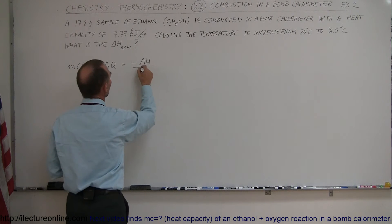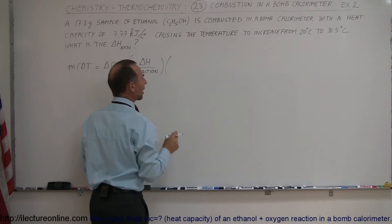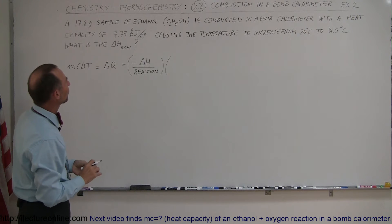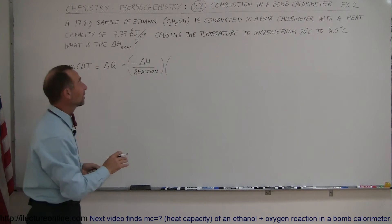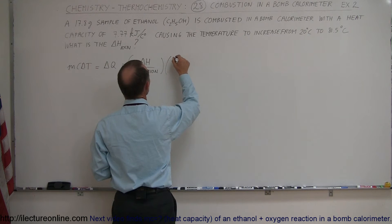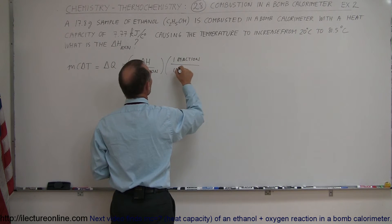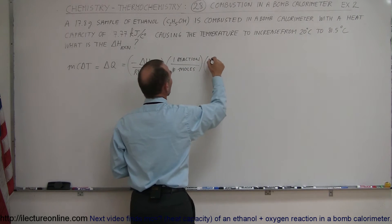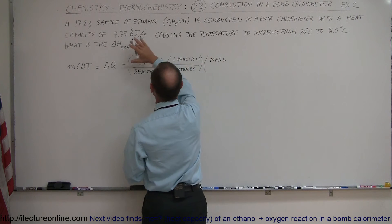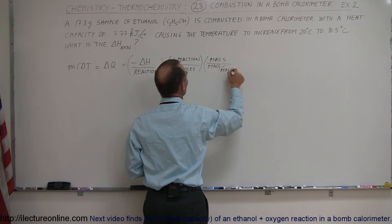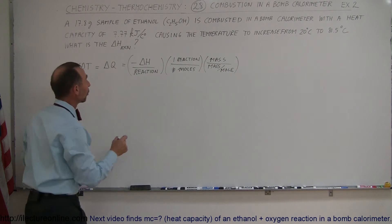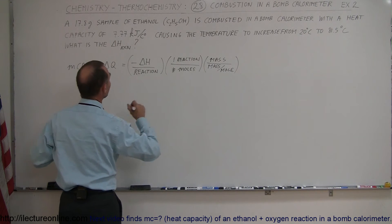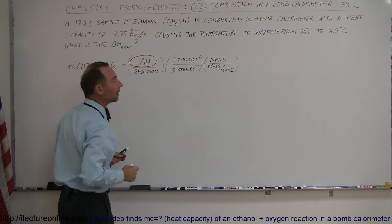The negative of the enthalpy change per reaction times, now we have to compensate for how many moles of the reactant there are. In the case of a combustion reaction of ethanol, we only have one mole of ethanol in the reaction. So it's one reaction divided by one mole, or the number of moles of the reactant, times the mass of the sample divided by the mass per mole. That's our general equation. Now recognize what we're looking for is delta H.